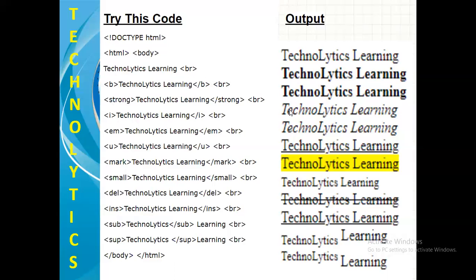Next is I for making it little slant. Next is emphasized. Again, making it slant. Next is U for underlining. Next is mark for highlighting. And as I told you, for highlighting the default background color is yellow.